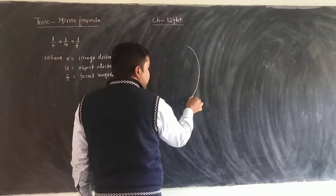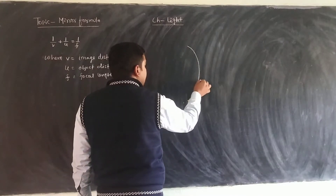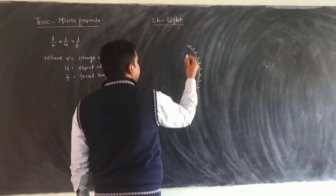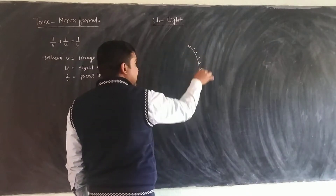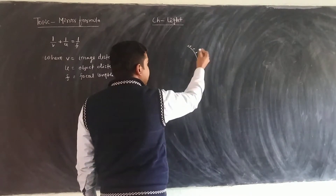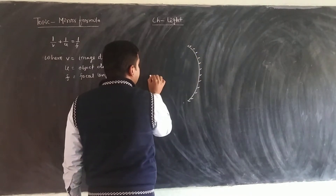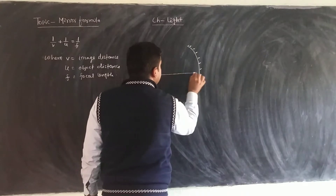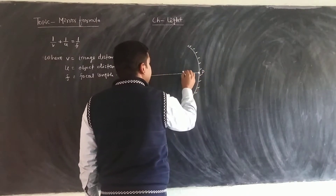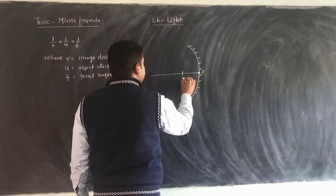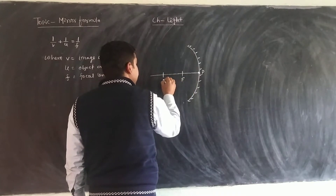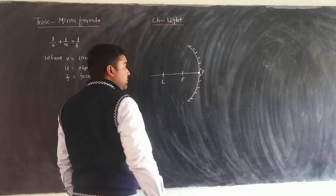This is a concave mirror. I am going to explain the mirror formula for a concave mirror. This line is the principal axis. This point is the pole, this is the principal focus, and this is the center of curvature.